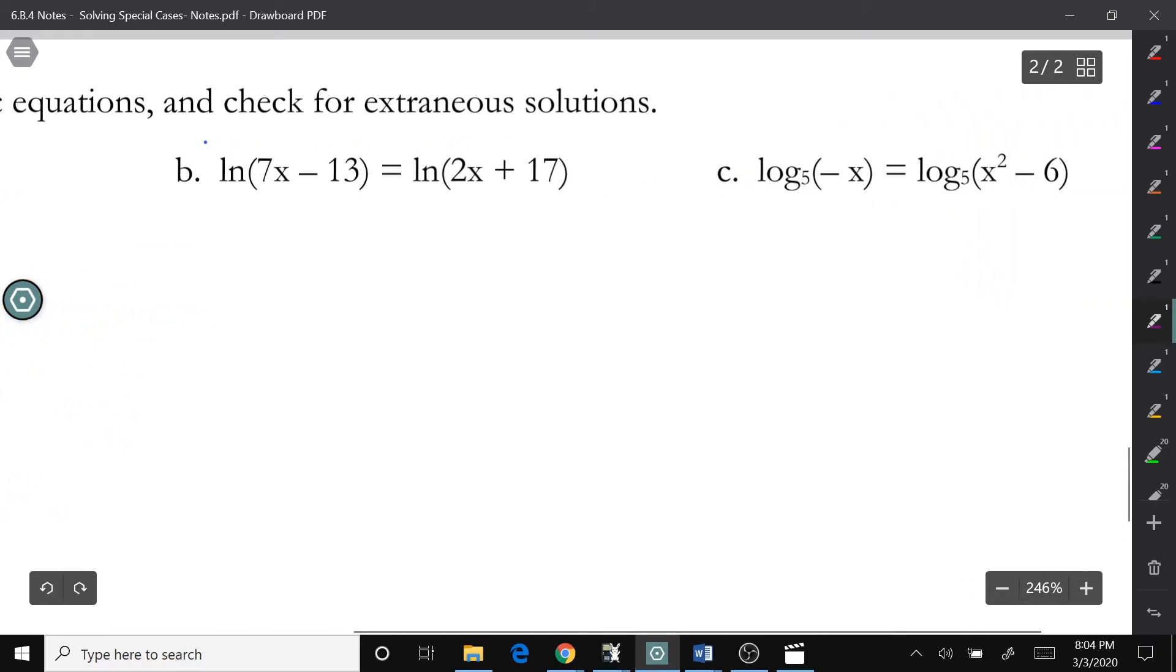Okay, so, remember ln is log base e. So, since these are both ln's, or log base e's, we can just set them equal to each other. So, 7x minus 13 equals 2x plus 17. And you can only do this if the logs have the exact same base. So, if one was ln and the other one is log base 10, that wouldn't work. There would be no way for us to solve that at this point. Alright, so, minus 2x, plus 13, 5x equals 30, divide both sides by 5, x equals 6.